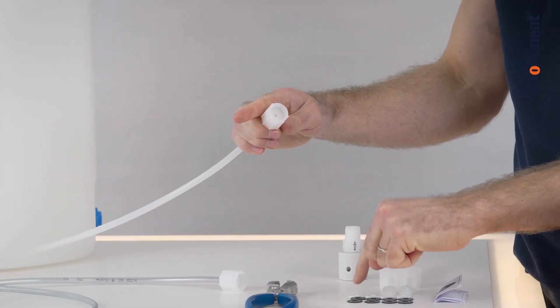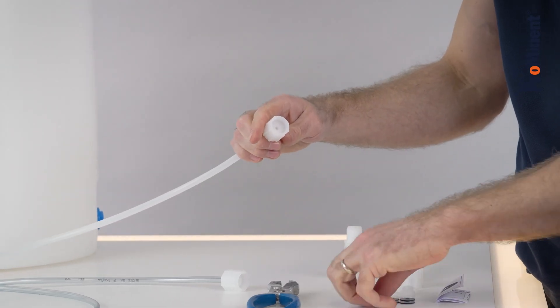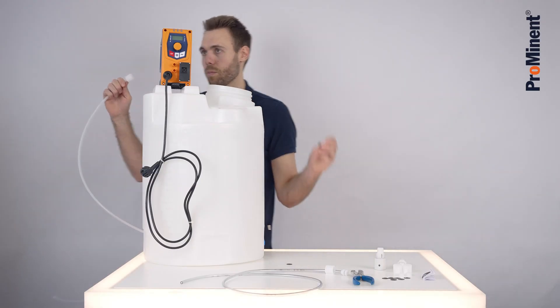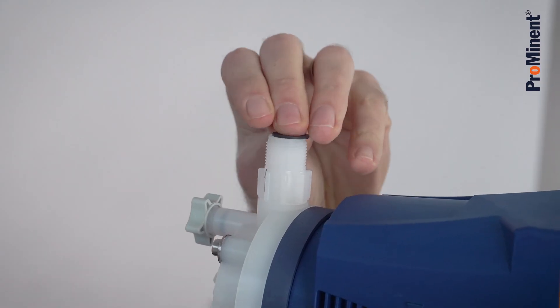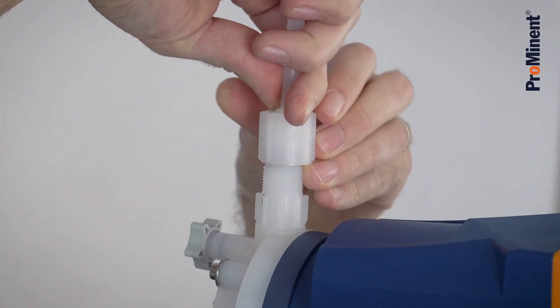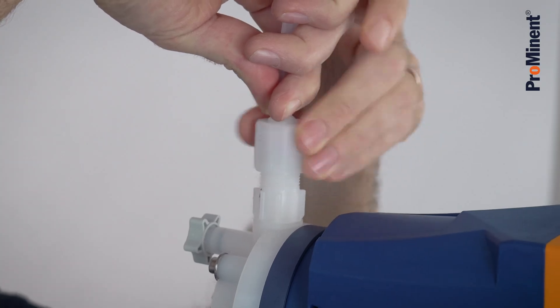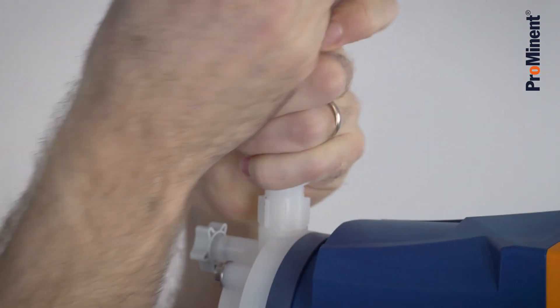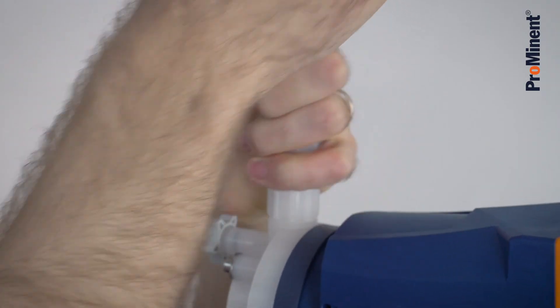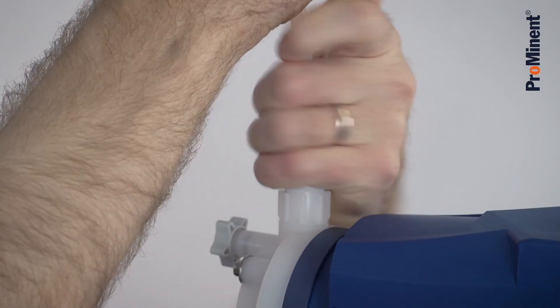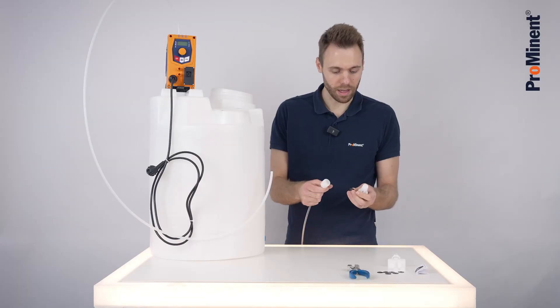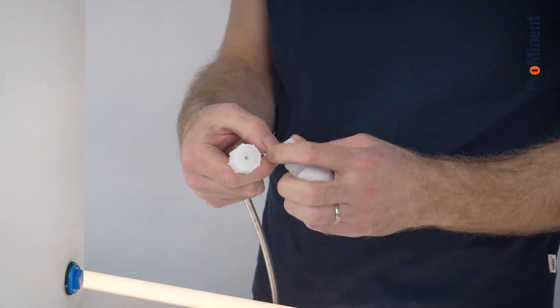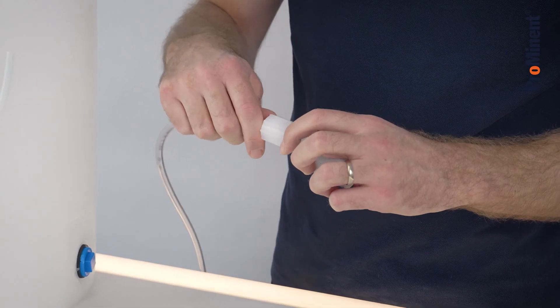Then you select the correct sealing for your medium. Now you install the pressure tube, therefore use the sealing and screw it on hand tight. As the next step I connect the foot valve, also using the correct sealing for your medium.